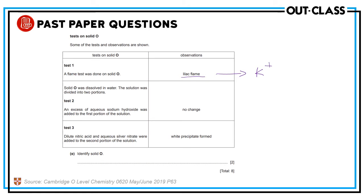Solid O was dissolved in water and the solution was divided into two portions. An excess of sodium hydroxide was added to the first portion — no change. Potassium ion does not form a precipitate with sodium hydroxide. Dilute nitric acid and aqueous silver nitrate were used for the second portion. Silver nitrate is a test for halide ions; a white precipitate indicates chloride ions.